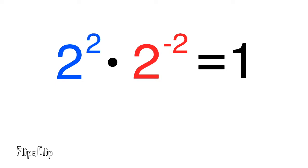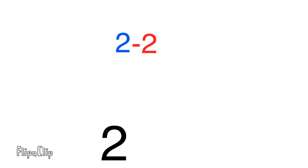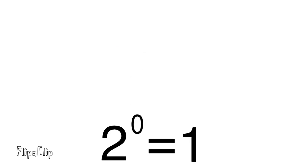Here's another way to look at it. When multiplying two terms that have the same base, we add their exponents — but in this case we're adding a negative. Exponent two plus exponent negative two leaves us with exponent zero. Two to the power of zero equals one.